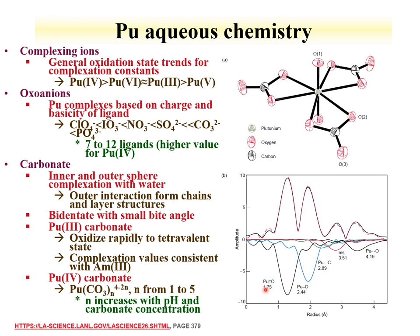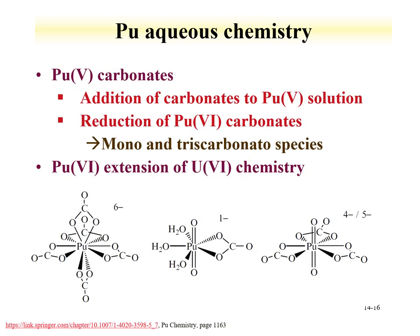XAFS data provides bond distances for the plutonium double-bonded oxygen, plutonium-oxygen from the carbonates, plutonium-carbon, and outer oxygen. Plutonium-3 carbonate species are rapidly oxidized to the tetravalent state, and complexation constants for plutonium-3 can be modeled on americium-3. Plutonium-4 carbonates can have 1 to 5 carbonate ligands, and this coordination increases with pH and carbonate concentration. Plutonium-5 carbonates can be formed by adding plutonium-5 to carbonate solution or reducing plutonium-6. Plutonium-6 carbonates are essentially an extension of the uranium-6 system, with slightly smaller distances due to the actinide contraction.